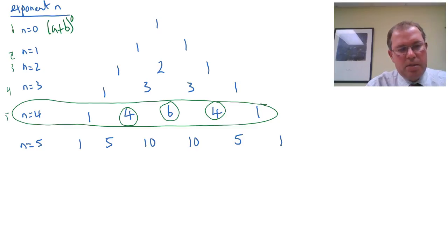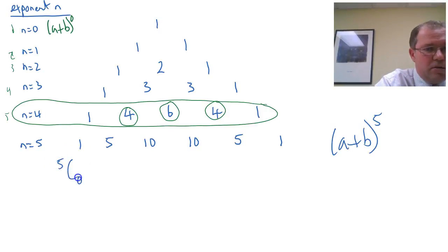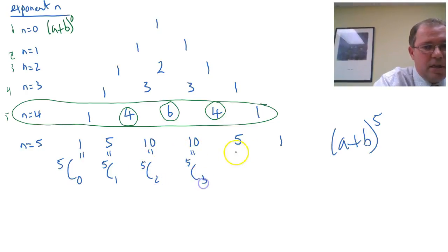So going back to Pascal's triangle, and if we're looking there at the 6th row, when n equals 5, when we're expanding a plus b to the power of 5, the first one we consider as 5 choose 0. The next term is 5 choose 1. The next term is 5 choose 2. The next term is 5 choose 3. 5 choose 4. And 5 choose 5.